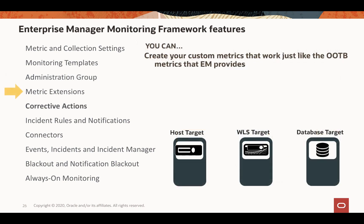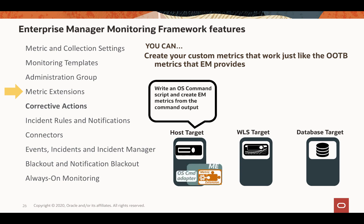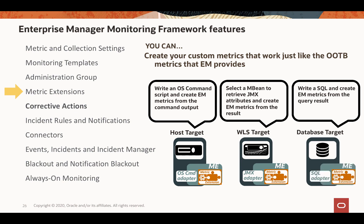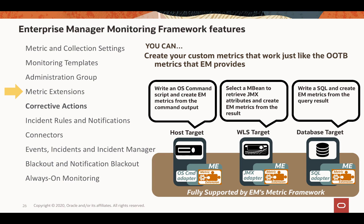In addition to the out-of-the-box metrics EM ships with, you can also create your own custom metrics that work just like the other metrics EM provides. For example, you can write an OS command script and create EM metrics from the output, or for middleware targets, select MBean and JMX attributes to create EM metrics from the result, or write a SQL statement and create EM metrics from the query result. Custom metrics fully support thresholds, corrective actions, and notifications, just like other EM metrics.